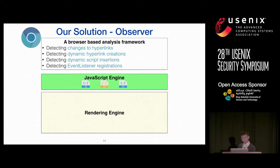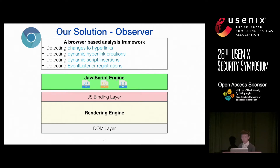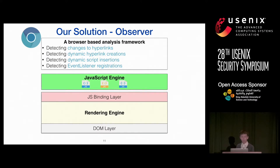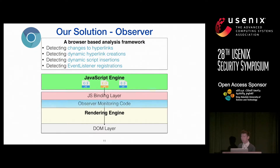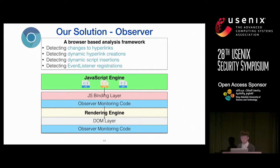In the rendering engine, there are several layers. The two important ones are the JavaScript binding layer and the DOM layer. The DOM layer implements APIs described in the DOM standard. For JavaScript to invoke those APIs — such as creating new elements or modifying href attributes — it must indirectly invoke them through the JavaScript binding layer. We enhanced the rendering engine by adding monitoring code in both the binding layer and the DOM layer to observe all these interactions.